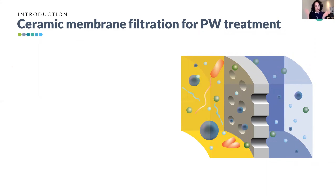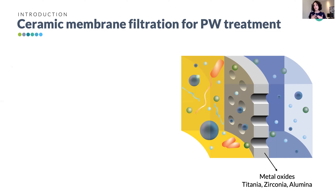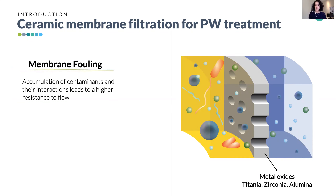In filtration, contaminated water is passed through the membrane to obtain cleaner water. In this case the membrane is ceramic — usually made of metal oxides such as alumina, zirconia, and titania. Ceramic membranes have shown great long-term performance under high temperatures and aggressive chemicals. However, the main drawback is membrane fouling or clogging, where accumulation of contaminants leads to higher resistance to flow, reducing the membrane lifetime and leading to higher CAPEX and OPEX.